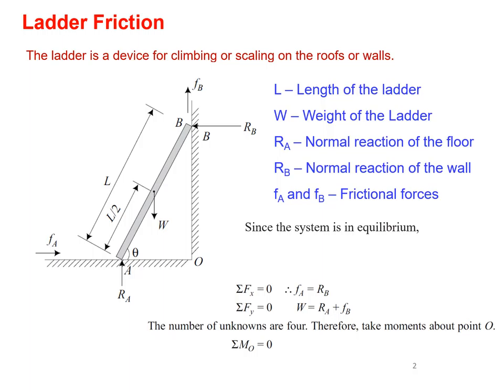In this diagram you can see a ladder resting on a horizontal surface. One end of the ladder is resting on the horizontal surface and the other end is leaning against the wall. The length of the ladder is L (AB), the weight of the ladder is W acting through the center, and there are two reactions: RA, the normal reaction of the floor, and RB, the normal reaction of the wall. Both reactions act perpendicular to the surface of contact at points A and B.